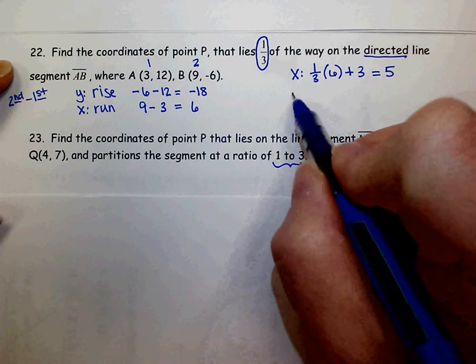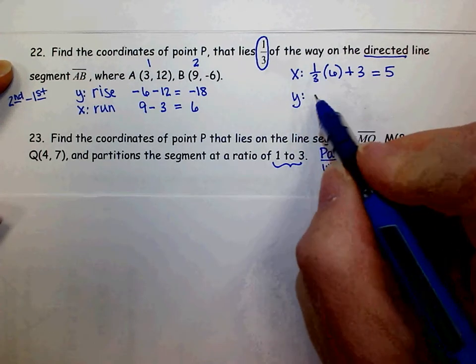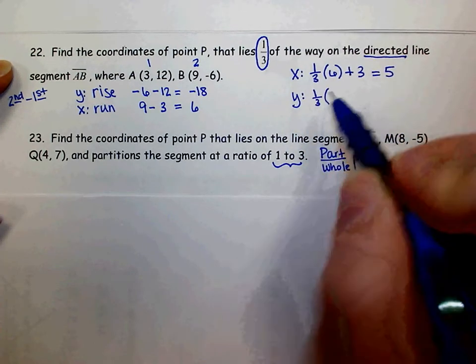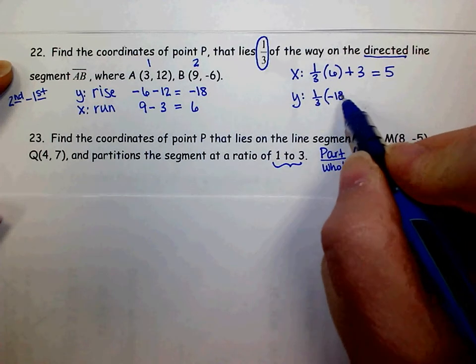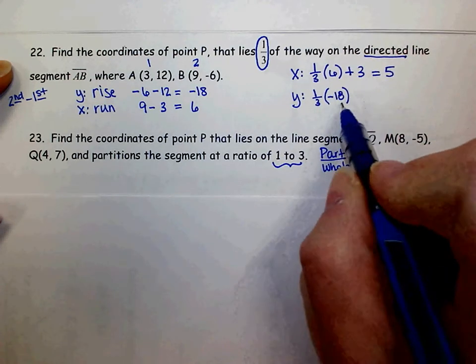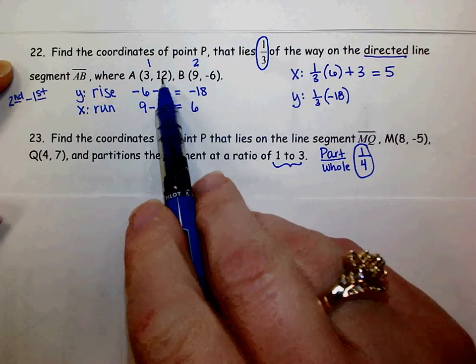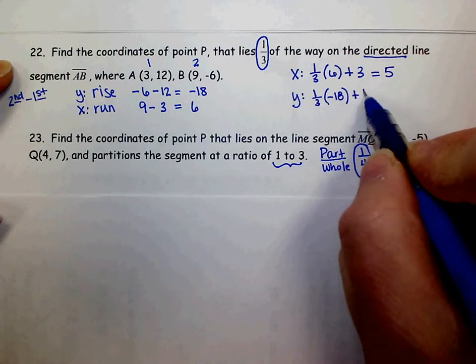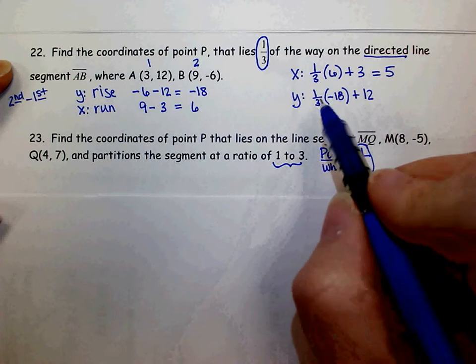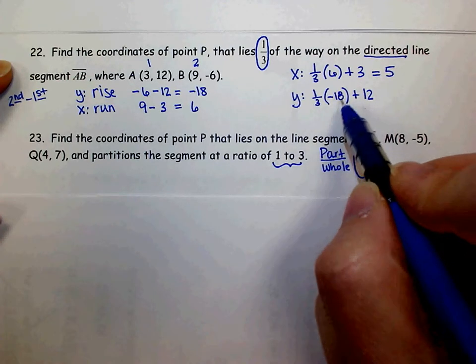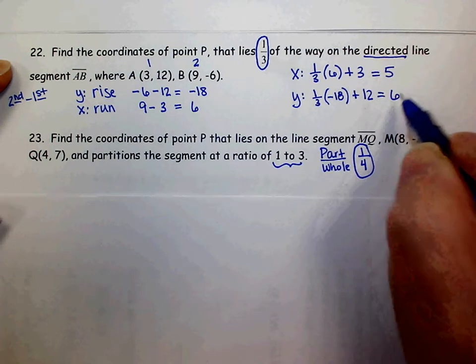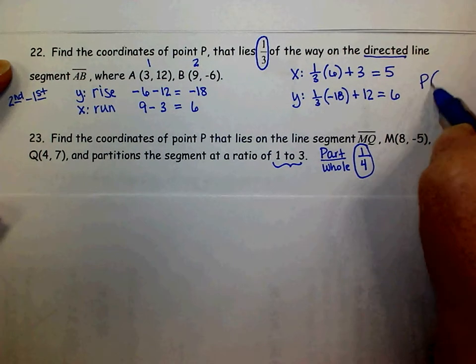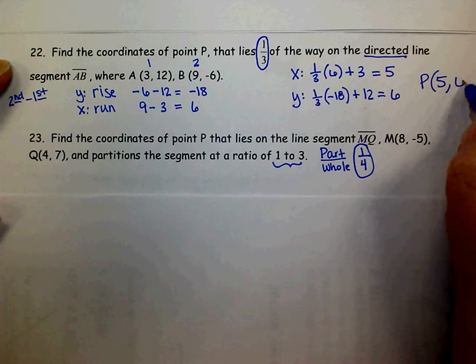The y-coordinate, I want a third of the rise. So I want one-third of the negative 18. That's how far I'm going. But I want to start at my original point, which had a y of 12. So I'm going to add that to 12. So a third of negative 18 is negative 6. Negative 6 plus 12 is 6. So my point P is the point 5, 6.